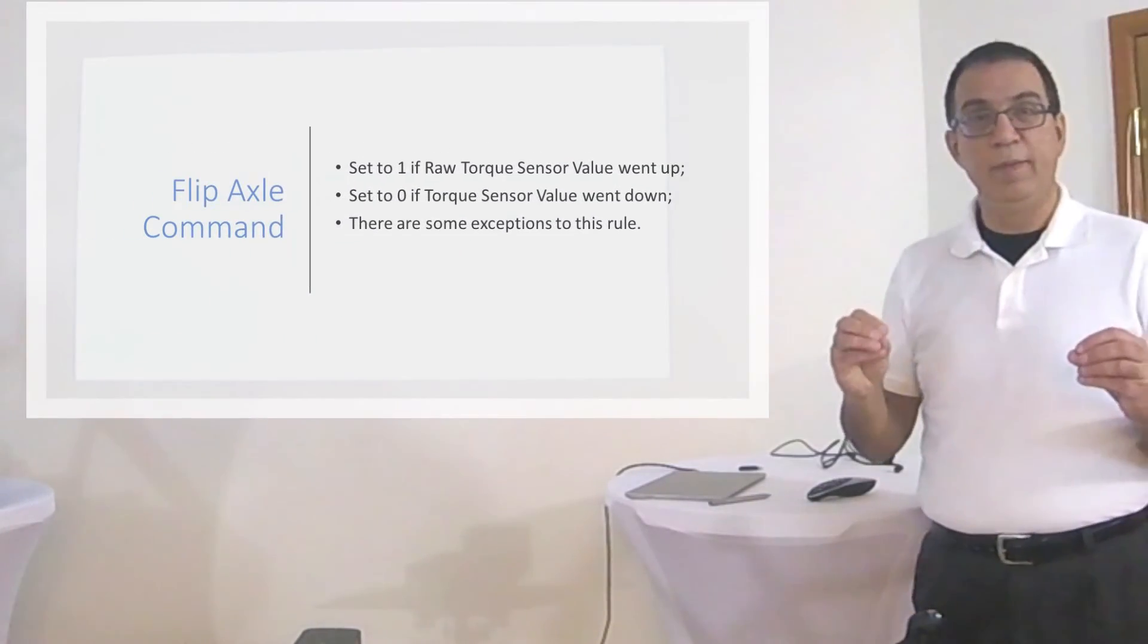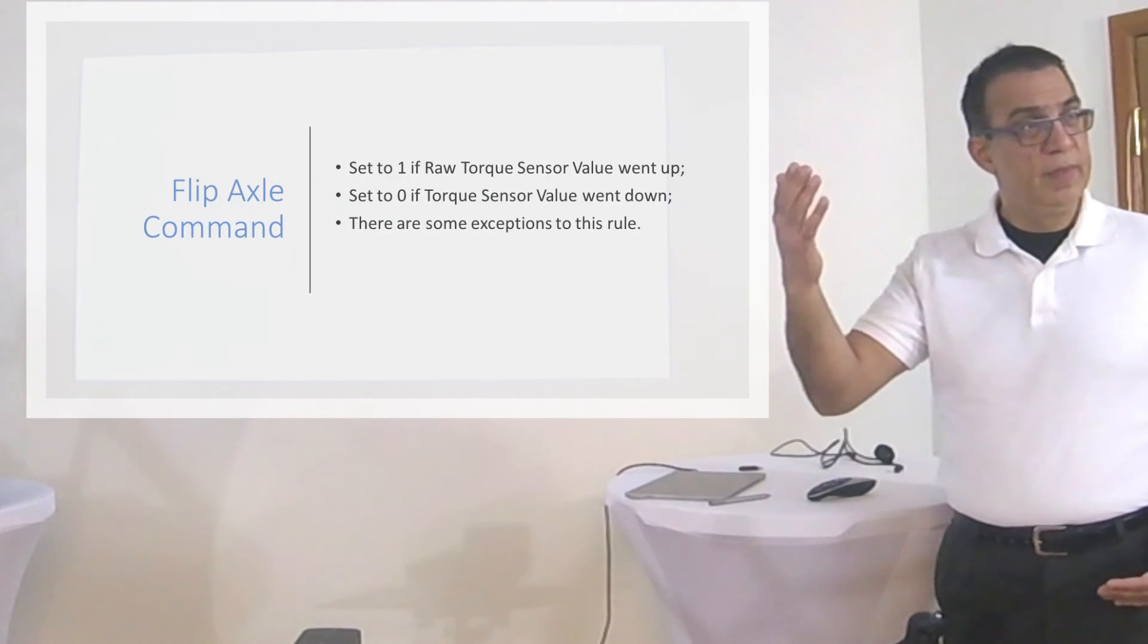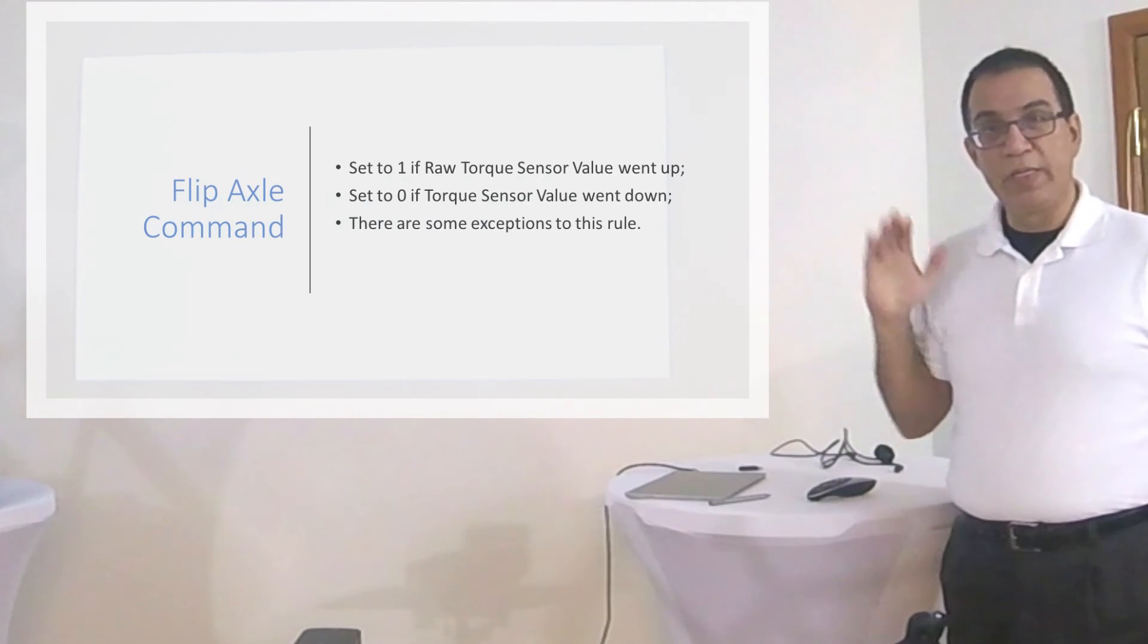The flip axle command needs to be 1 if your raw torque sensor value was going up. It needs to be 0 if the raw torque sensor value was going down.